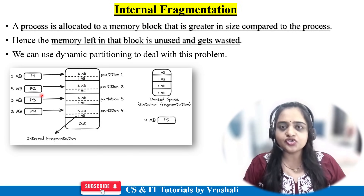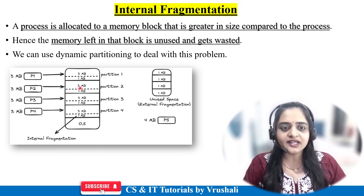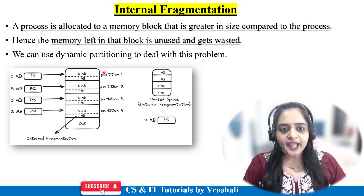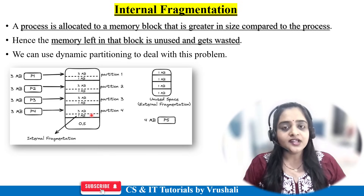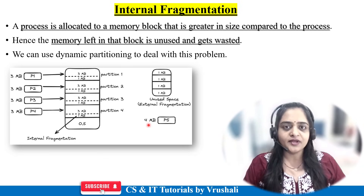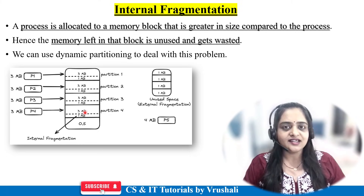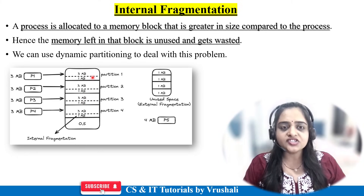Similarly, process 2 is coming and also requires 3MB of memory. Again they use 3MB and 1MB memory is remaining. The same happens for process 3 and process 4. Now every field has 1MB remaining — this is a wastage of memory, an unused space. Suppose process 5 is coming and requires 4MB of memory. There is a total of 4MB available, but not continuously. This is called internal fragmentation.